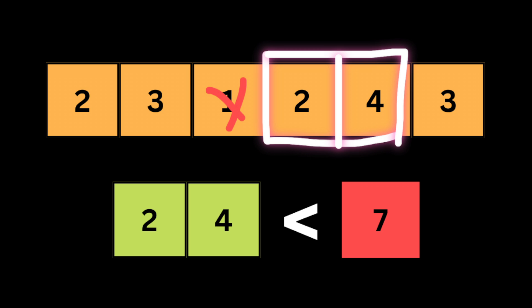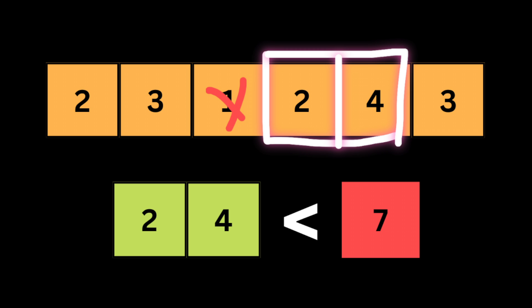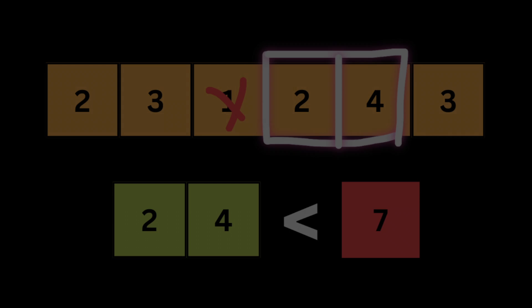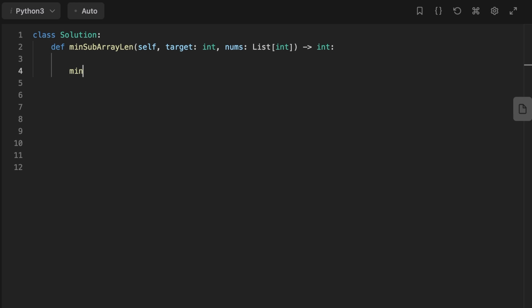Nine is bigger than the target seven, so we shrink the window again. Now the sum is seven and the target is seven, and the length is two — we only used two numbers. The previous valid subarray used four numbers to reach the target, but now we have just two numbers that sum to seven. So we return the minimum length, which is two.